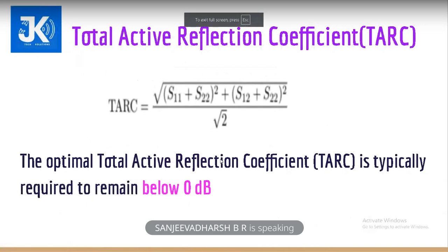The first parameter is total active reflection coefficient. The formula is: TARC equals the square root of (S11 + S12) squared plus (S21 + S22) squared, divided by root 2. The optimal value of total active reflection coefficient should remain below 0 dB.